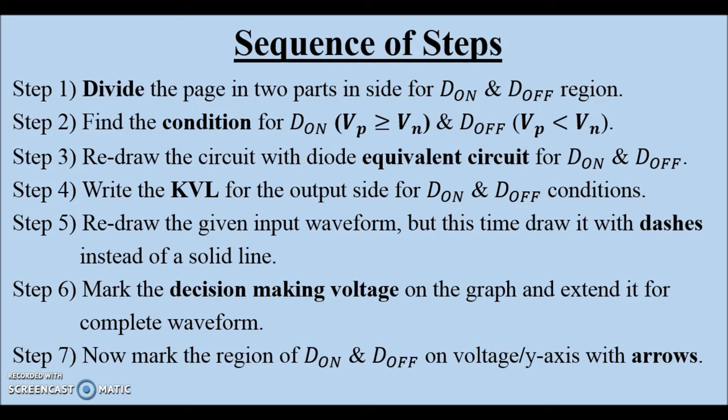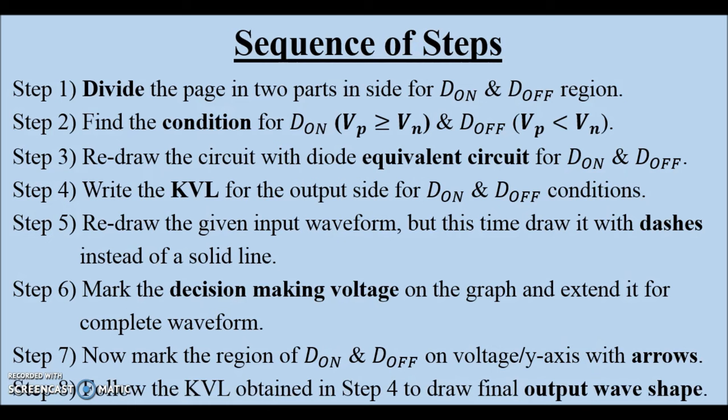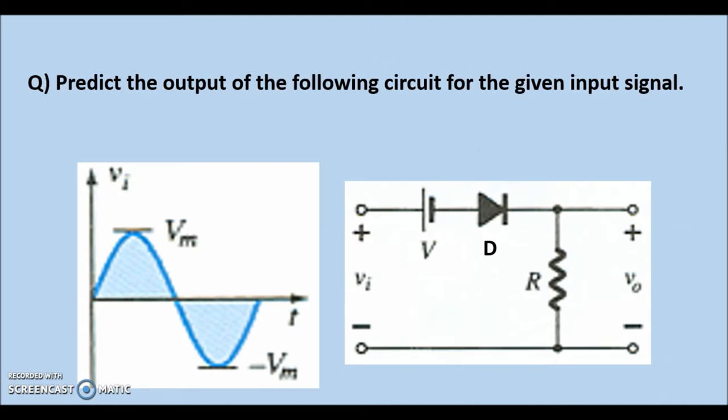Seventh, mark the dOn and dOff region on the graph. Eighth, use the KVL equations obtained in step 4 to draw the final output waveshape. Here is a sample question whose output signal waveshape we need to predict. Note down this circuit and the given input signal in your notebook and try to predict the output waveshape by yourself. You may pause the video and resume it once you are ready with your answer.